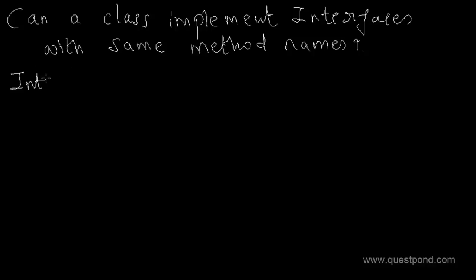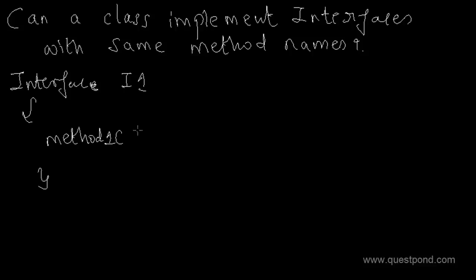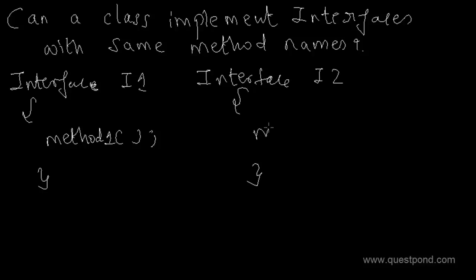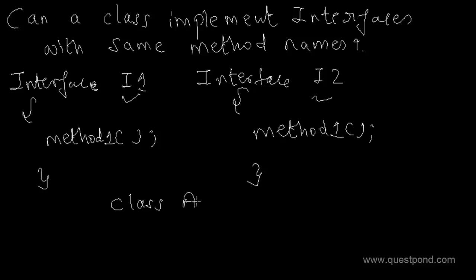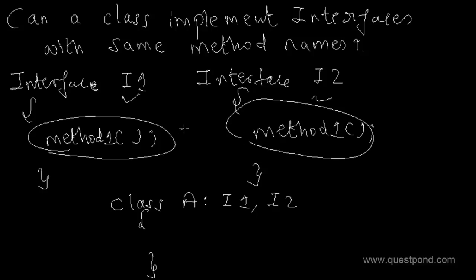Let's say that you have an interface called i1 which has a method called method1. You then have one more interface called i2 which has again a method called method1. This is pseudo code, so don't expect it to compile directly in Visual Studio — it's just meant to illustrate the scenario. We have two interfaces i1 and i2. Now let's say we create a class called A which implements both i1 and i2. Both method names in these interfaces are the same: method1 and method1.